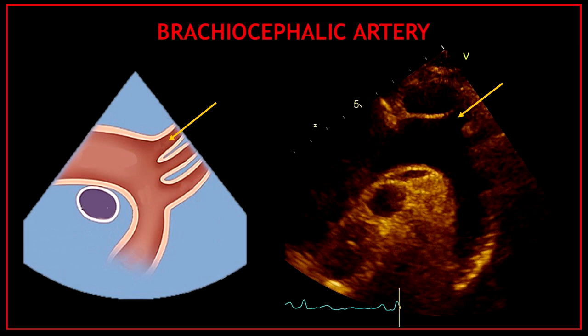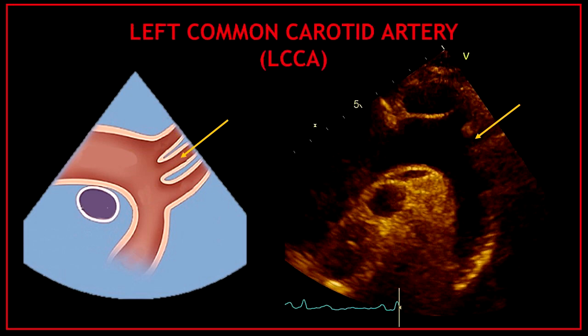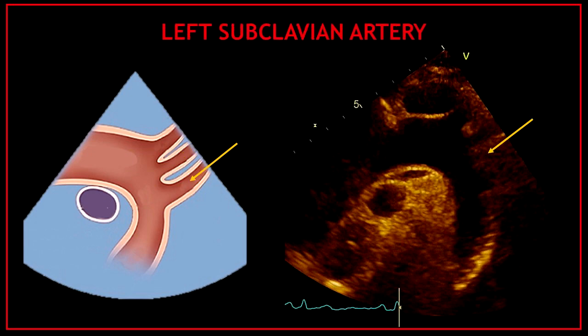In this view we can visualize the three main branches emerging from the aortic arch. The first one is the brachiocephalic artery, also known as the innominate artery. The second branch is the left common carotid artery, and the third branch you can visualize emerging from the aortic arch is the left subclavian artery.